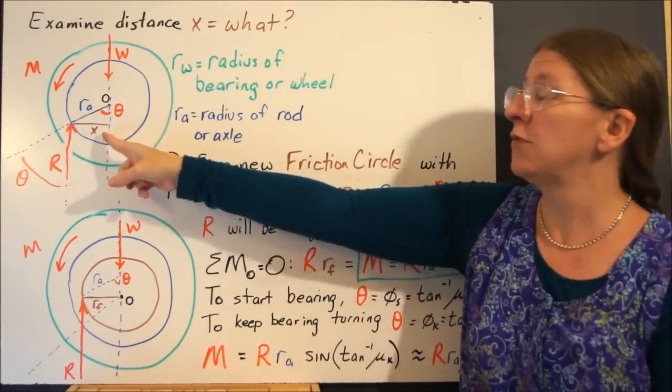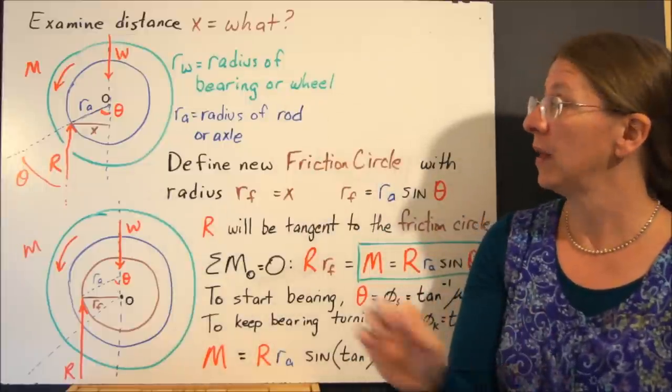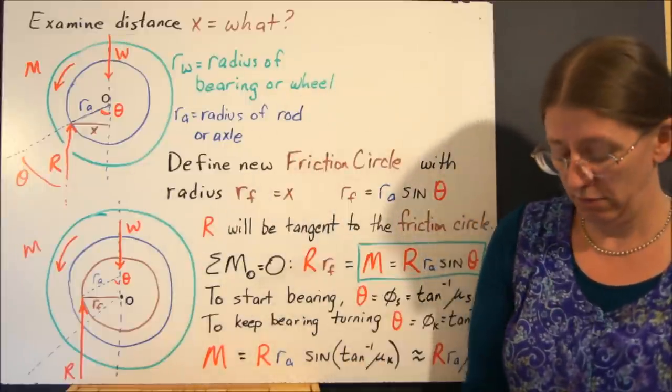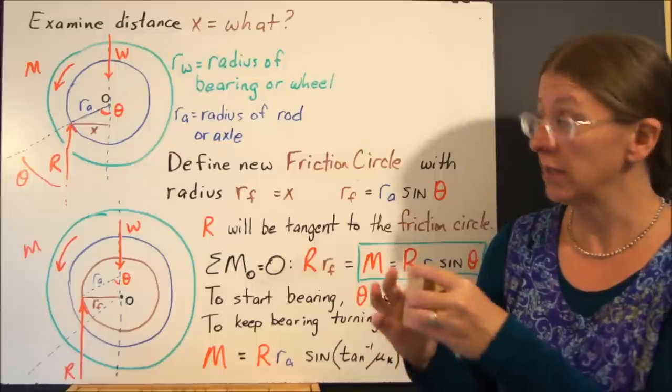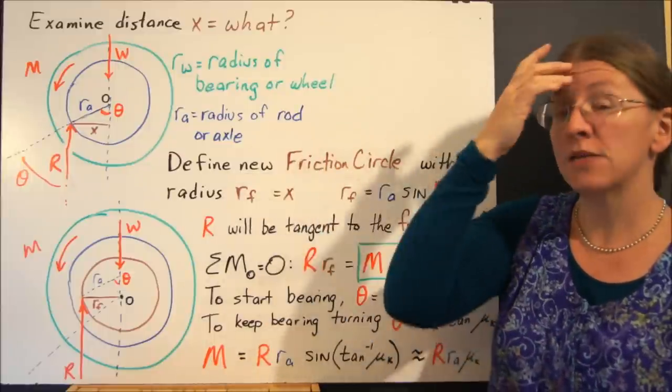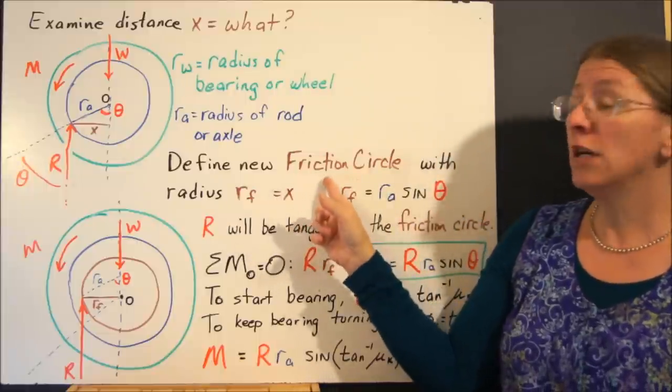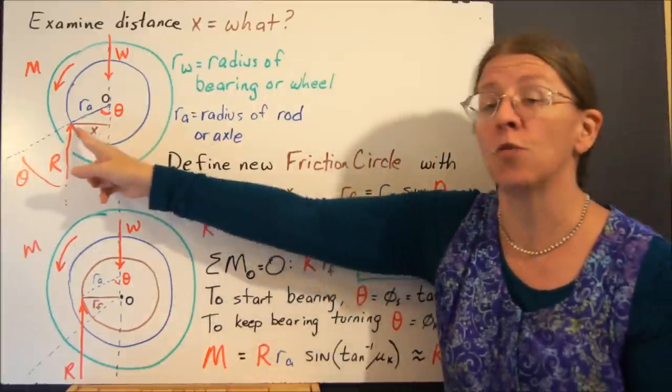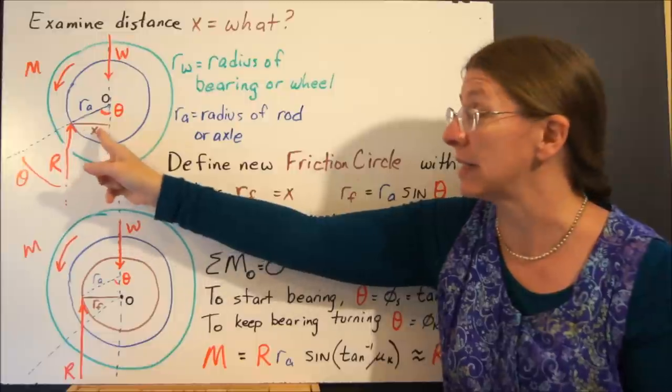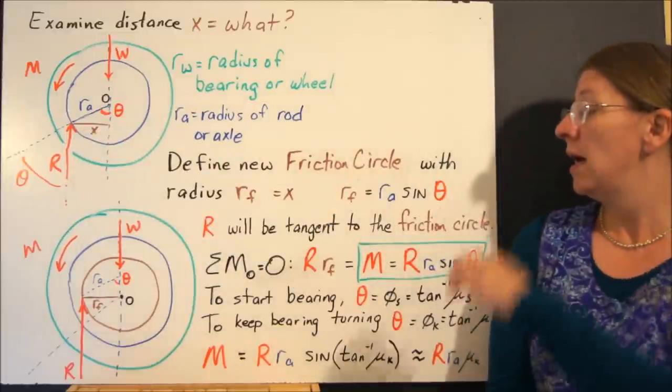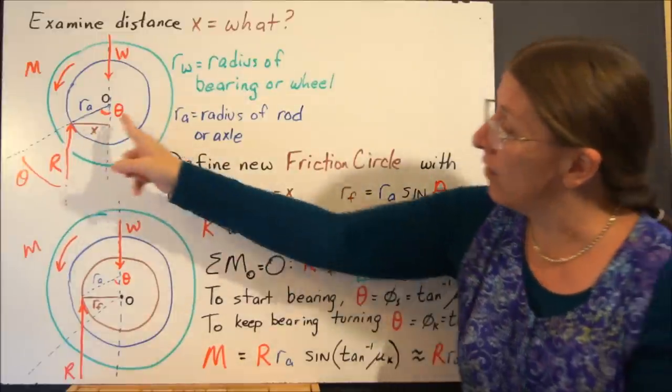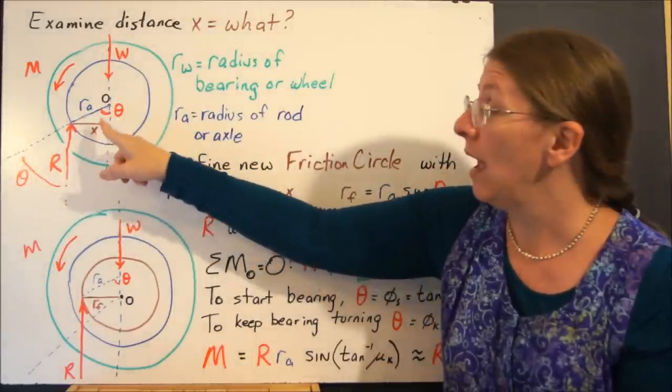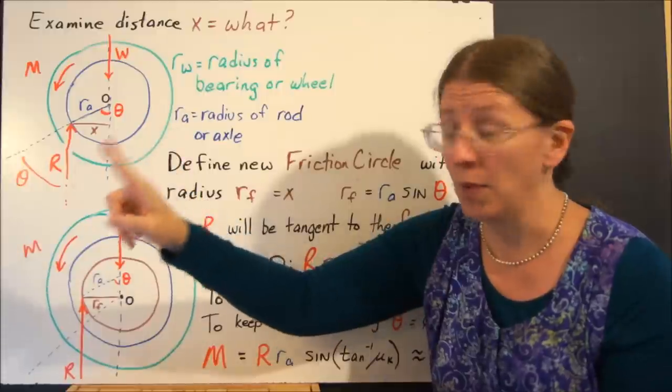I'm actually going to define a new thing. So Rw is the radius of the bearing, or the wheel. You know, how big and round is it? Ra is the radius of the rod. I'm going to define a friction circle, where Rf is the radius, a circle of radius X, or whatever this distance was. You can look at this little triangle in here, made up of Ra and X.